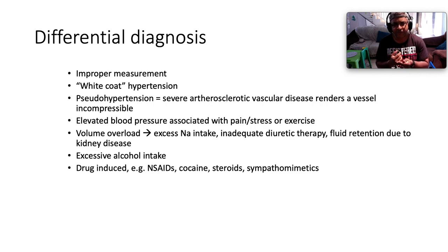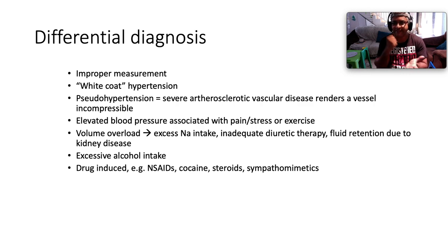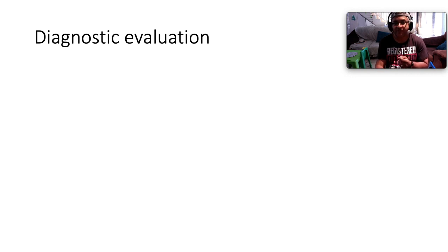The differential diagnosis for essential hypertension includes improper measurement technique, white coat hypertension where blood pressure is elevated only in a healthcare setting, pseudohypertension due to severe atherosclerotic disease rendering vessels incompressible, and elevated blood pressure associated with pain, stress, exercise, or emotion. Volume overload causes include excessive sodium intake, inadequate diabetic therapy, fluid retention from kidney disease, excessive alcohol, and drug-induced causes. NSAIDs are problematic — they induce fluid retention, inhibit prostaglandins, reduce afferent arteriolar vasodilation, and diminish GFR. Substances like cocaine, steroids, and sympathomimetics may also induce high blood pressure.